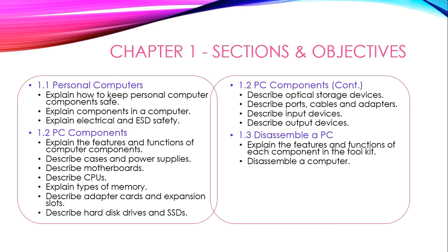This chapter is further divided into three main components. The first part is about what a computer is and why we need computers. The second segment covers the internal parts and components of computers, such as motherboard, CPU, RAM, disk drives, optical drives, different ports, and input and output devices. The third part covers the features and functions of each component in the toolkit, and finally we will learn how to disassemble a computer.